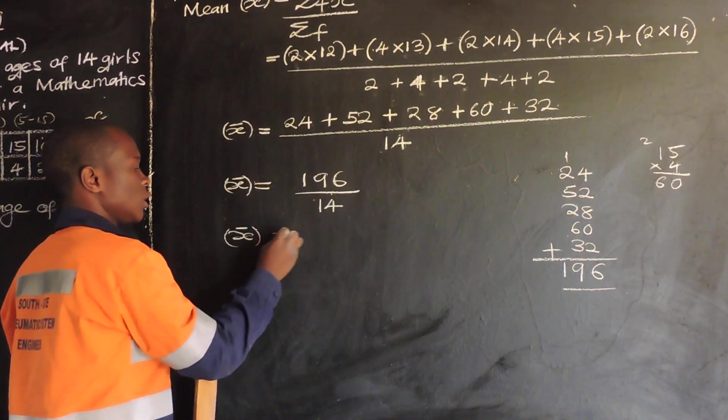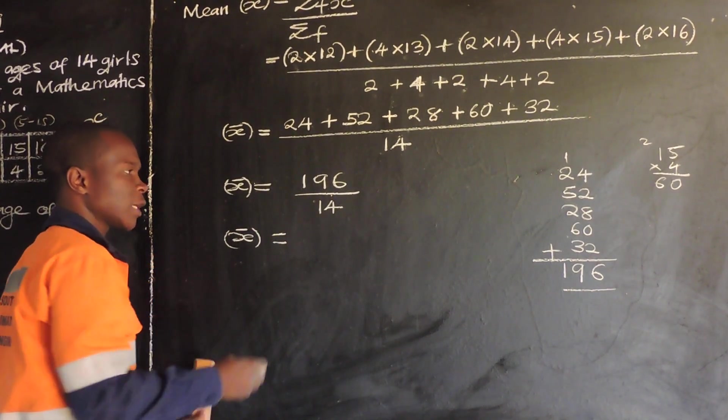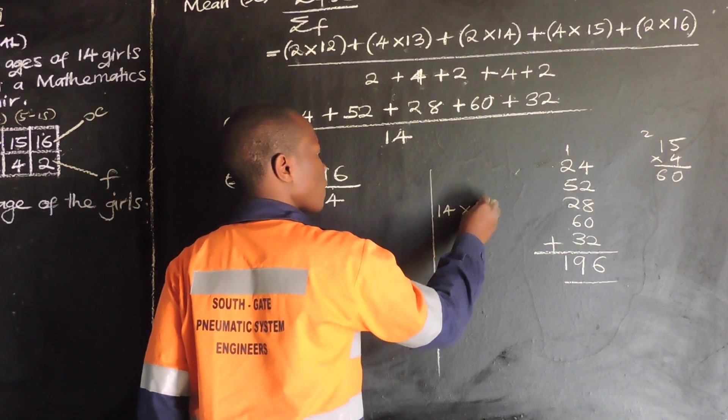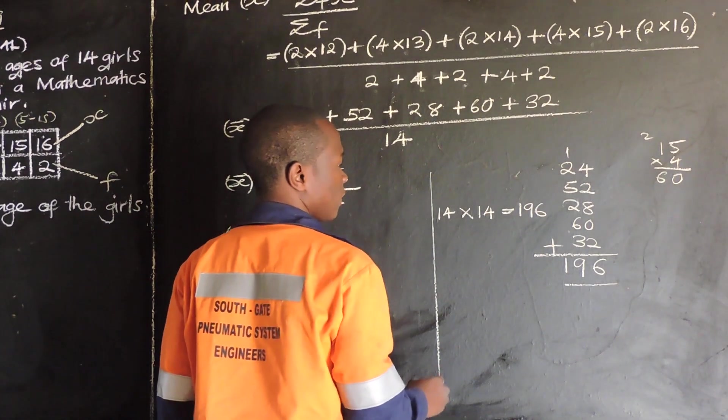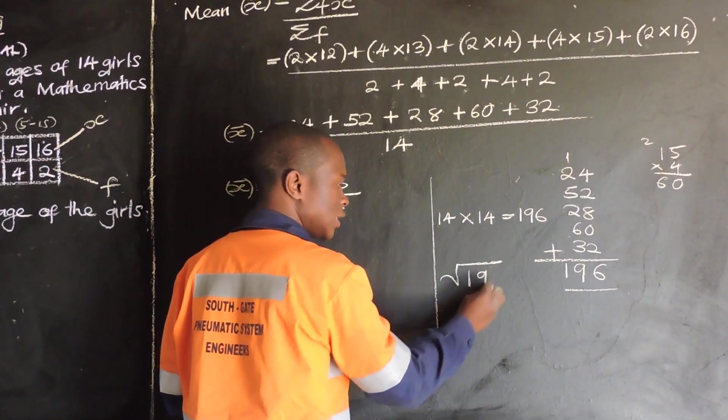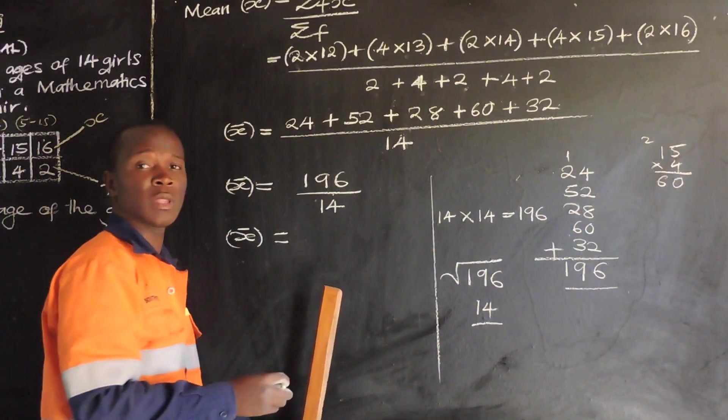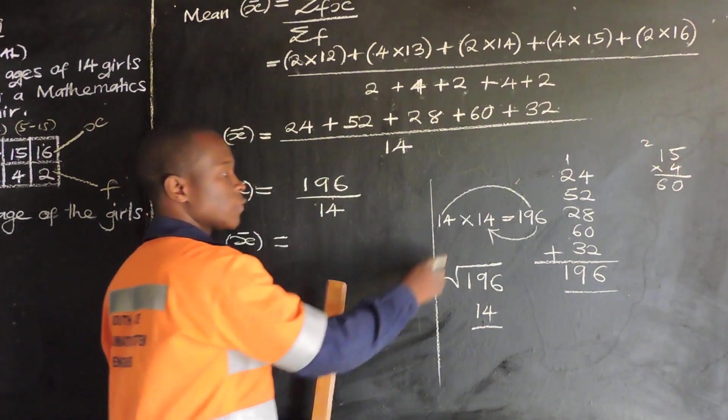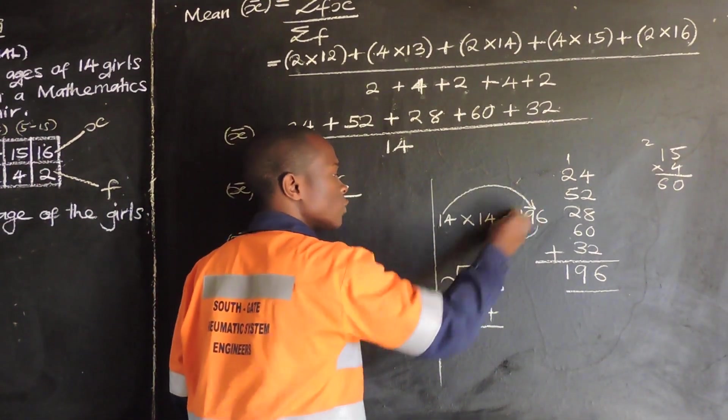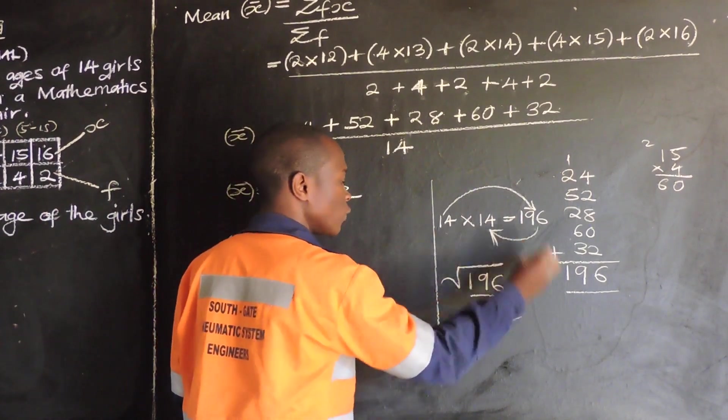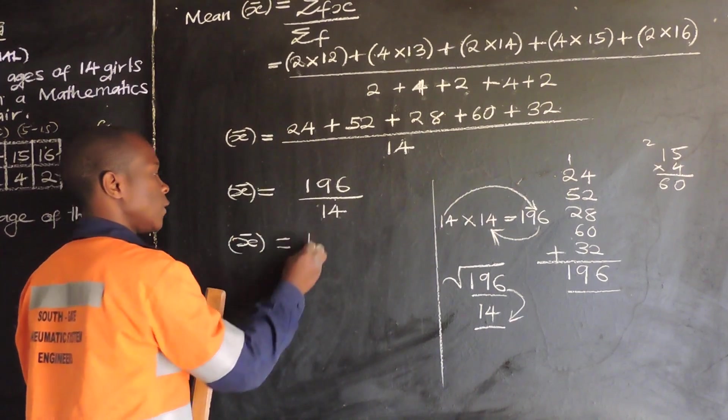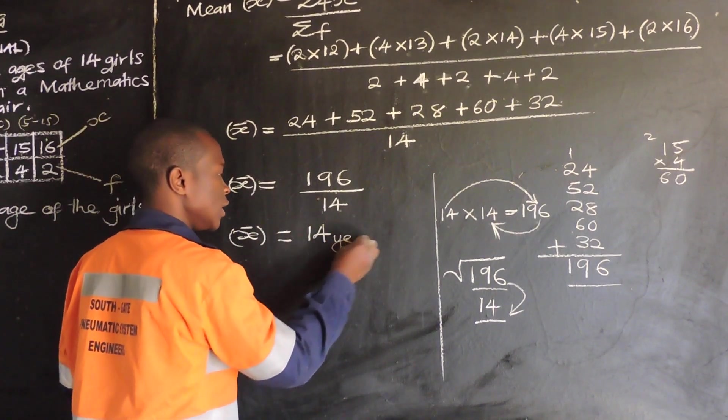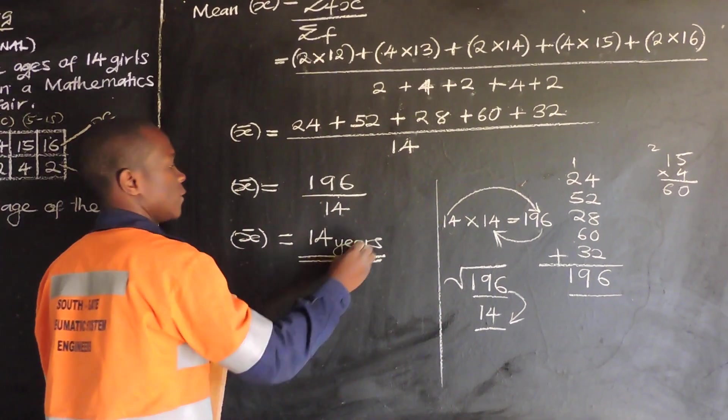So, we say x bar is equal to, we know that 14 times 14 is equal to 196. That's why we say the square root of 196 is 14. So, what it means is, 14 into 196 is 14. Because 14 times 14 is 196. So, it means 14 into 196, you get 14. The square root of 196 is 14. So, in this case, 14 into 196, you get 14. So, 14 is 14 years. That's the meaning.